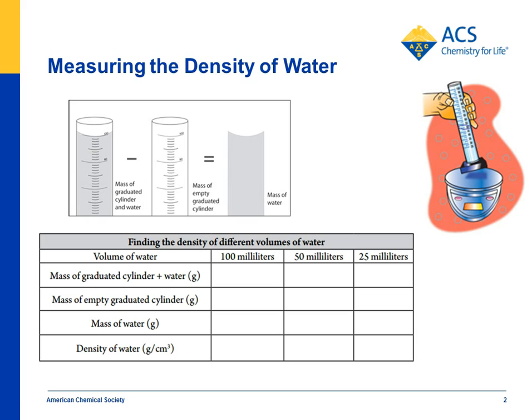Density equals mass over volume. What students will determine is whether they have 100 milliliters, 50, or 25 — the density of the water is going to be the same every time.